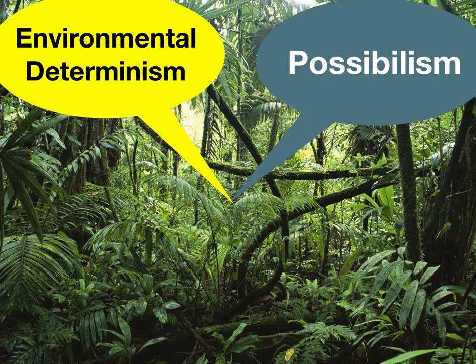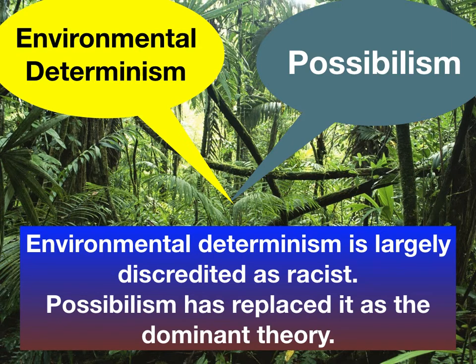Environmental determinism was first. It was an idea created in the 1800s, and it was really created as a way to justify colonialism and the mistreatment of people, especially in areas colonized by European countries. Over time, environmental determinism was largely discredited as a racist theory. Possibilism has really replaced it as the dominant theory, saying that human decision-making affects culture much more than the environment, although the environment does play a factor.